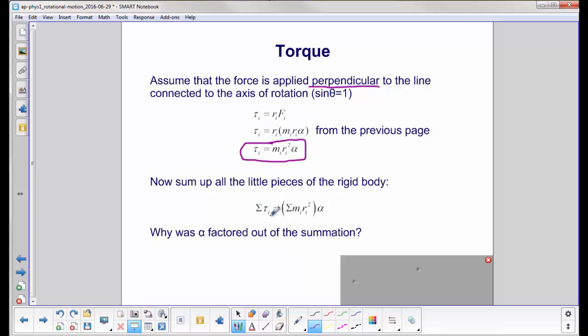So the sum of all the little pieces is the sum of M i R i squared, and look, we pulled alpha out of the summation. How come? What enables us to do that? I'll open this box here in a second, so if you want to pause it and talk about it.